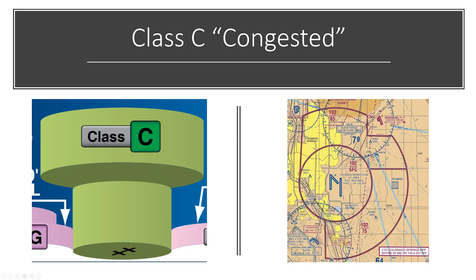Class C airspace is a bit bigger. This example is around Colorado Springs — the class C airspace over Colorado Springs airport goes from the surface up to 10,200 feet. Above that is class E airspace up to 18,000 feet. We're allowed to fly in class E but not the class C. It probably wouldn't be wise to try to fly over the top of this airport though, because if you can't find lift or you descend into the class C, you're breaking the rules.